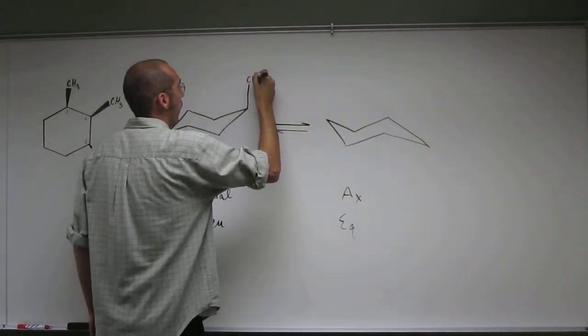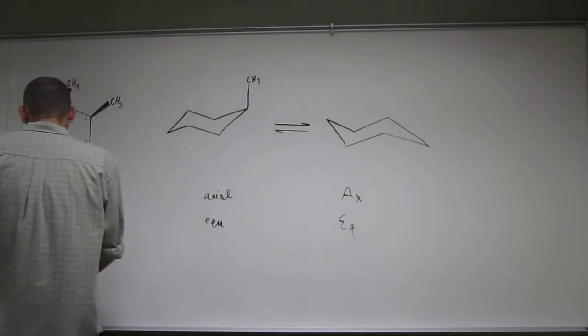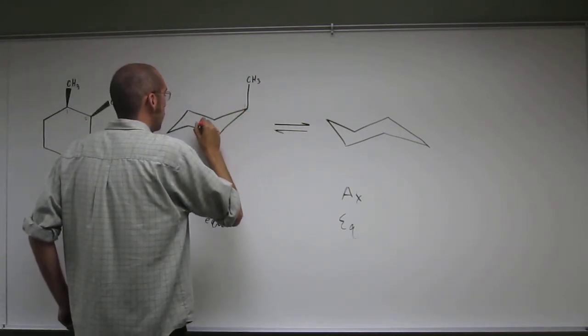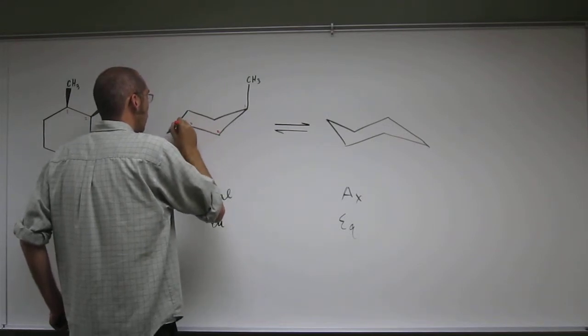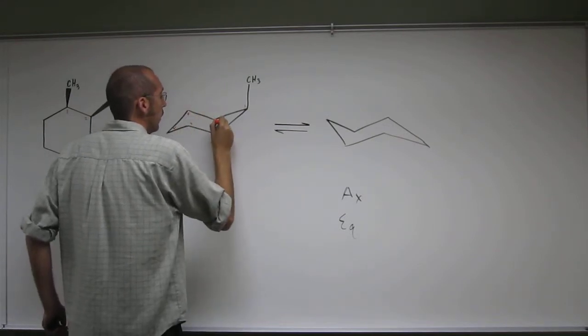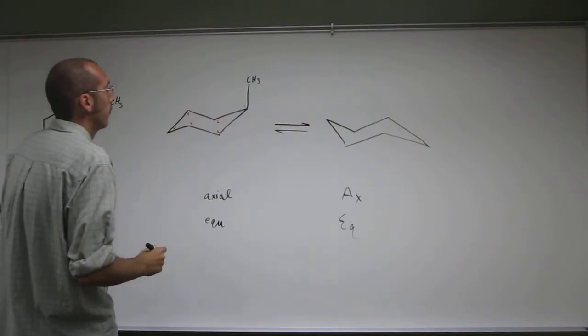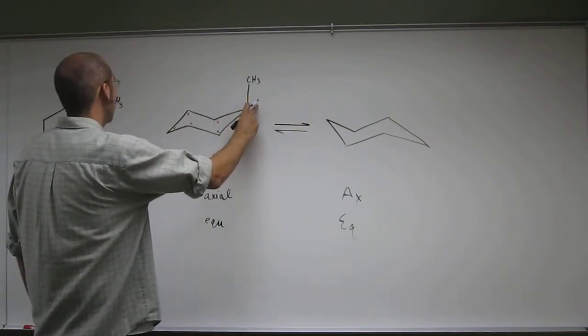So, guess we should label them here too, so 1, 2, 3, 4, 5, 6. Okay, so we got the axial there.